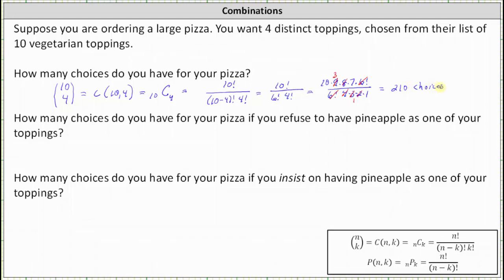Next question: how many choices do you have for your pizza if you refuse to have pineapple as one of your toppings? If you refuse pineapple, then there are only 9 vegetarian toppings available, and you are still selecting 4 of them. Therefore, the number of choices is 9 choose 4 — still selecting 4 toppings, but now from 9 instead of 10.